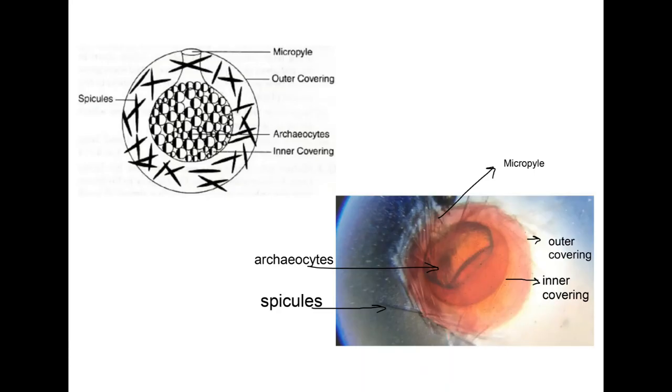As you can see here, here is our permanent slide. You can see the micropyle end, the spicules, outer covering, inner covering, and the archaeocyte cells inside. Hope you are clear how to make the permanent slide and what is the structure of the gemmules found in sponges. Thank you.